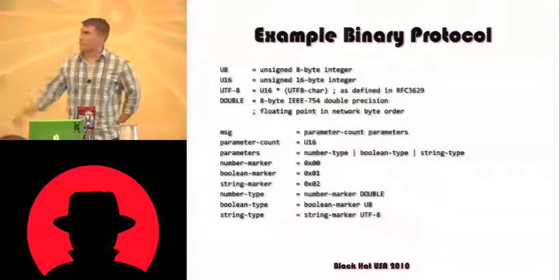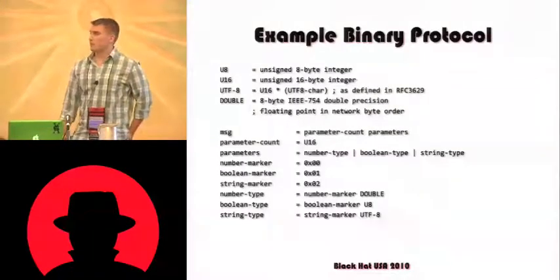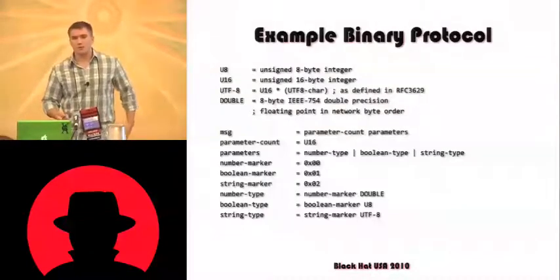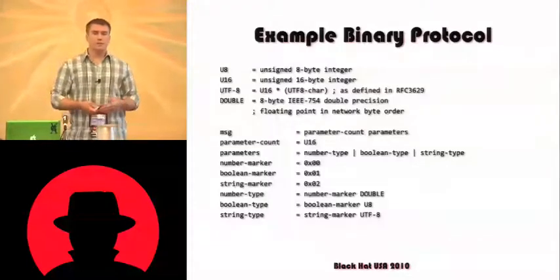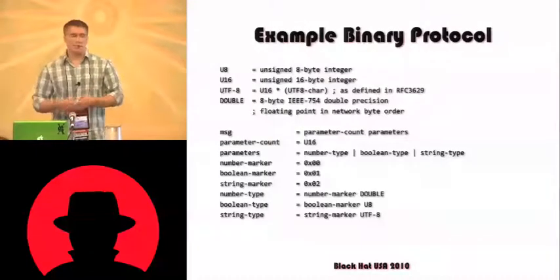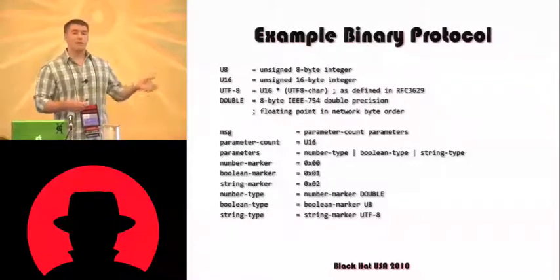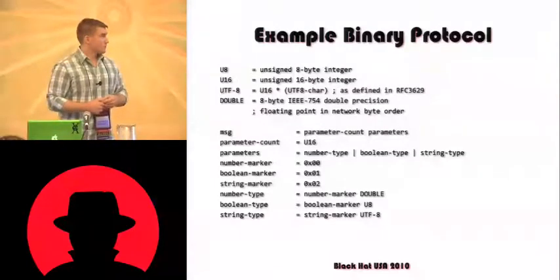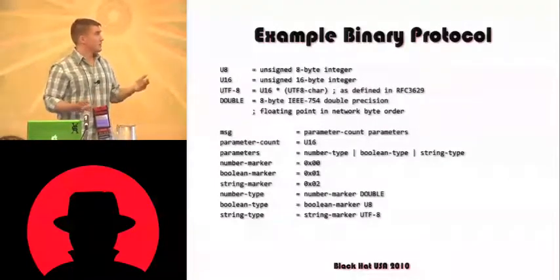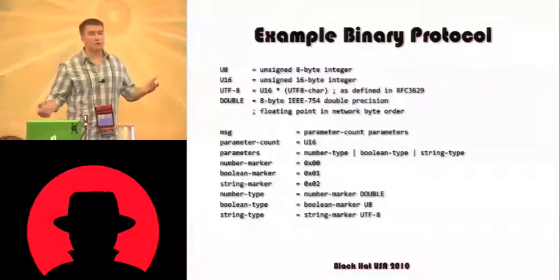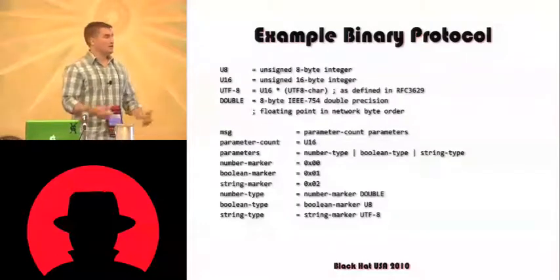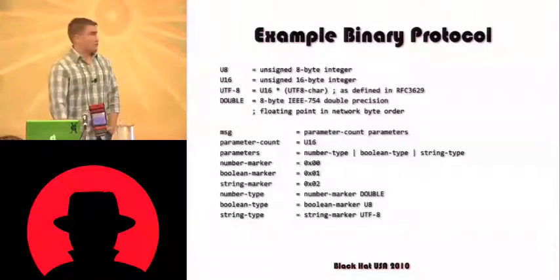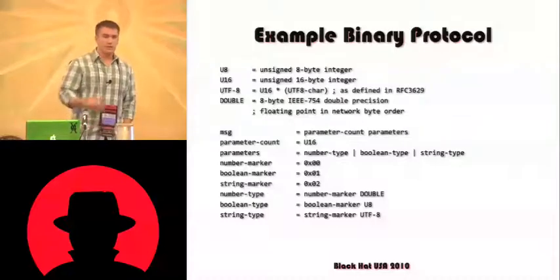This is just a simple binary protocol I whipped up as an example. A common thing among binary protocols is type markers that indicate the type that follows. Strings would have, following the type marker, the length of the string, and then the string itself. Strings are encoded in UTF-8, numbers would be encoded as doubles in network byte order.